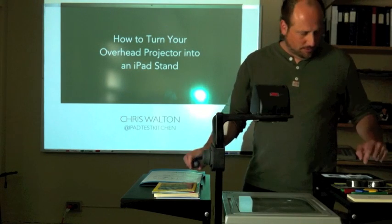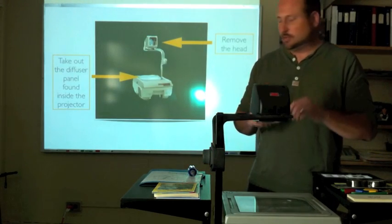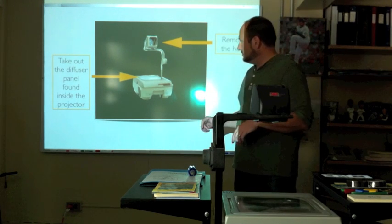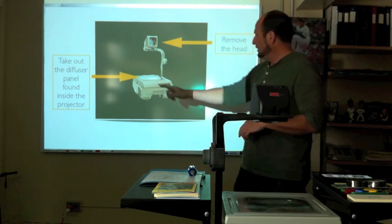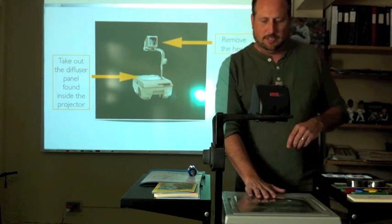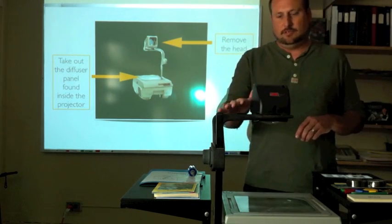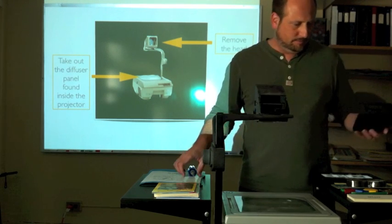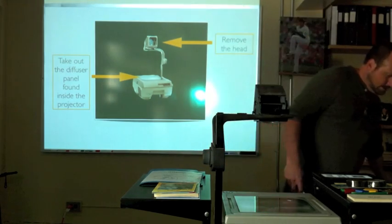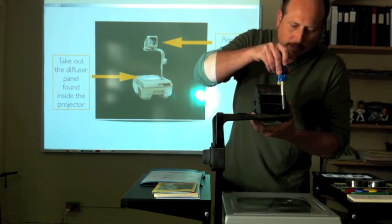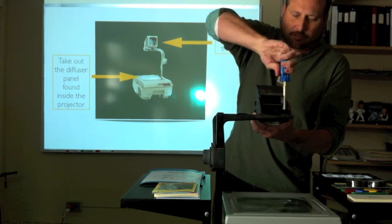First of all, I'm going to do two things as I work on this. I'm going to take the head of the projector off, and then I'm going to take the diffuser panel out from the middle of the unit and put it on top of the unit so that I can project my iPad from it. In order to take the head off, I just take apart the head so that I can access the screws underneath.